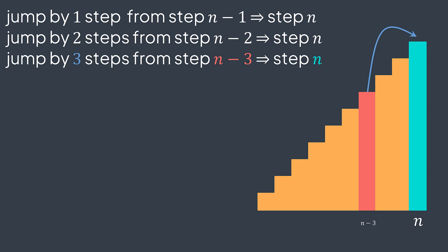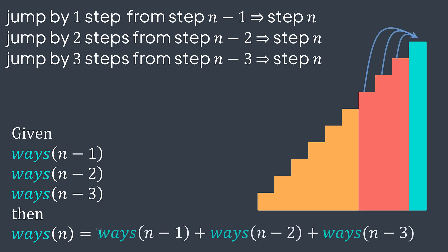Second question: if I give you the number of ways to reach step n minus one, the number of ways to reach step n minus two, and the number of ways to reach step n minus three, how can you calculate the number of ways to reach the nth step? To reach step n, we can either jump from step n minus one, step n minus two, or step n minus three. So to get the number of ways to reach step n, we just do the sum.